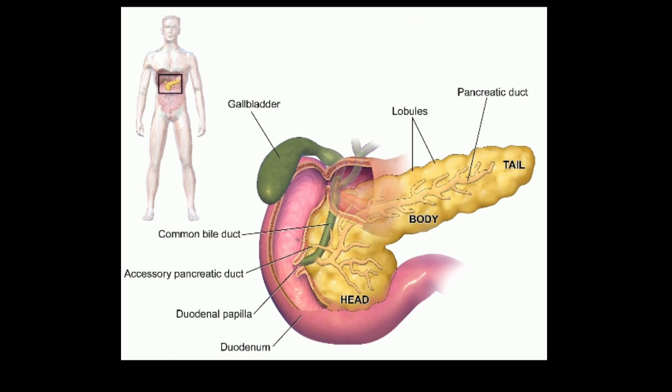Here we observe the structure of the pancreas, which is present at the loop of the duodenum. It has three important parts: the head, body, and tail. At the middle we observe the pancreatic ducts.